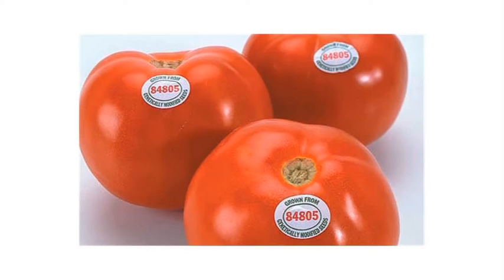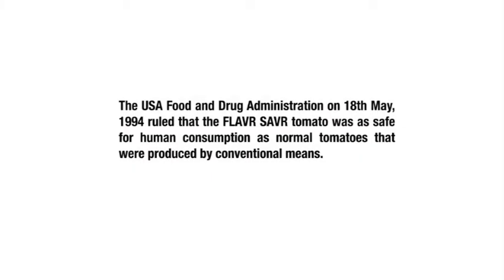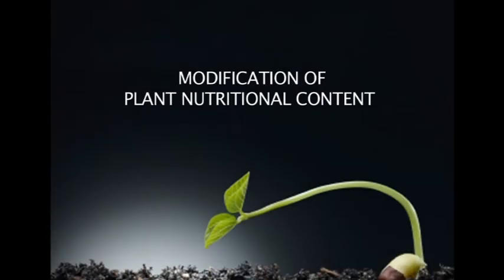The transgenic tomato developed by Calgene, a US-based biotechnology company, using antisense RNA technology is known as the Flavr Savr tomato. The USA Food and Drug Administration on 18 May 1994 ruled that the Flavr Savr tomato was as safe for human consumption as normal tomatoes produced by conventional means.